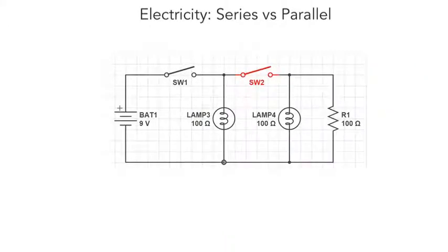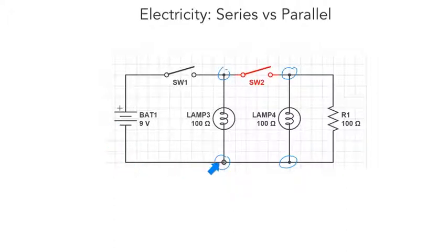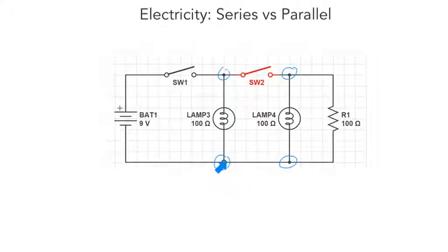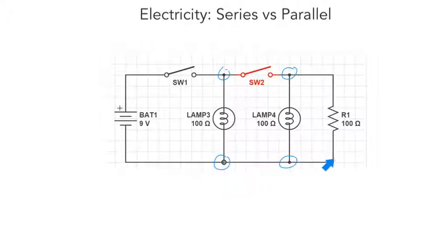Here we have a parallel circuit with three paths. How can we tell? We have two branch points. Leaving the terminal, at the first branch point the electrons can either go up through lamp three and continue back to the power supply, or continue on their way — that's the first branch point between path one and path two. Then at the second branch point, the electrons can either go up through the lamp, or choose path three and go through the resistor, and then back to the power supply.